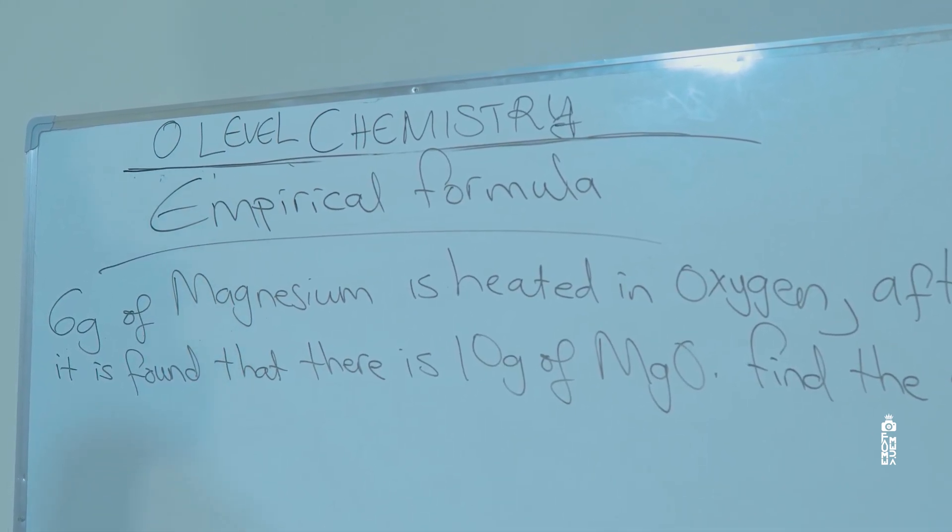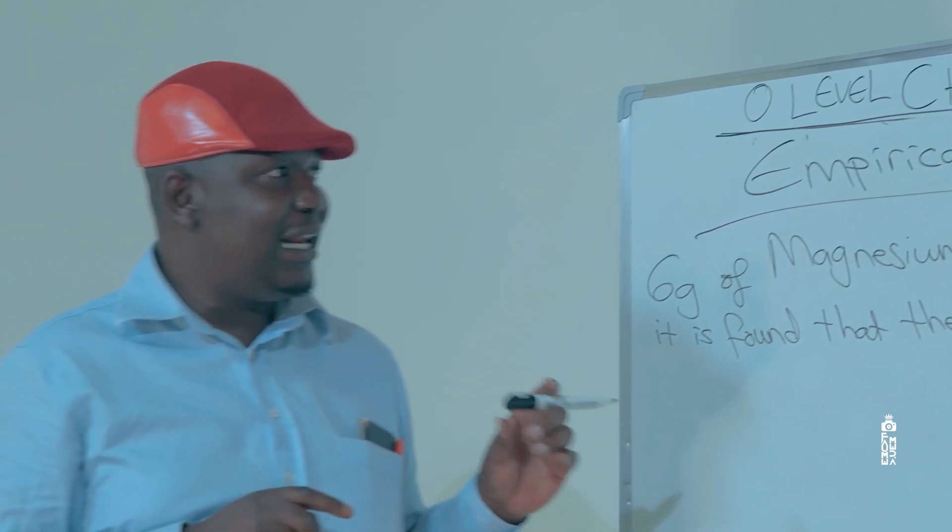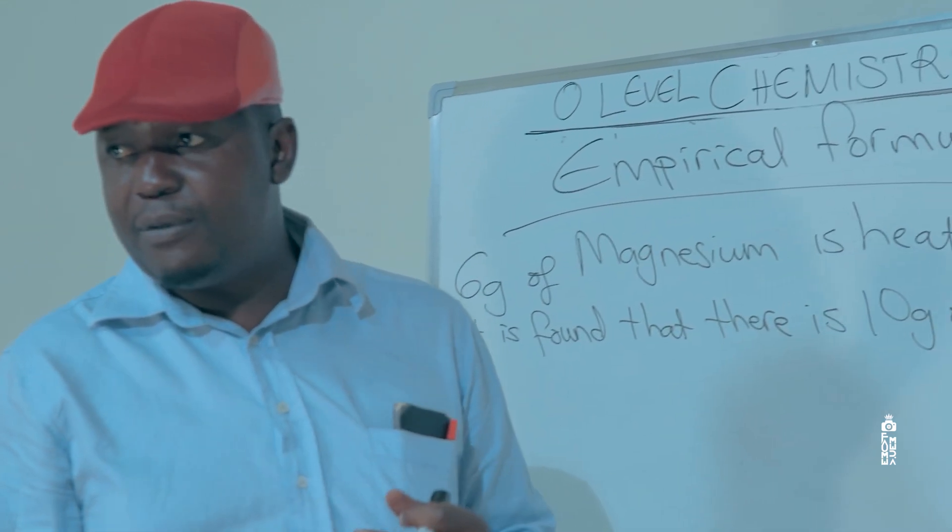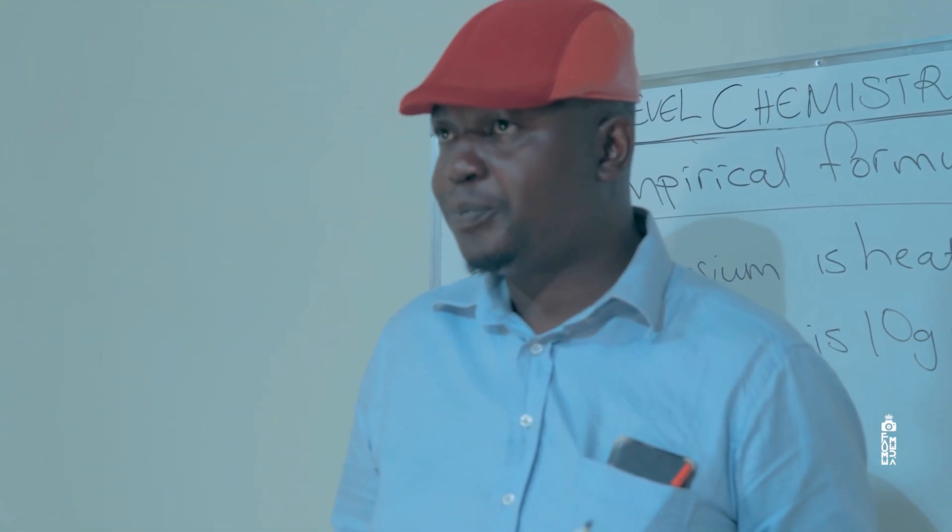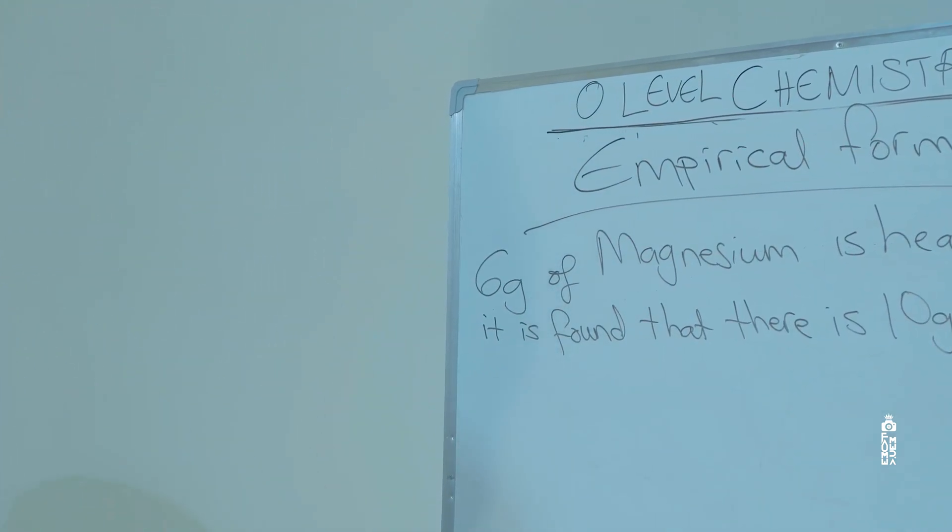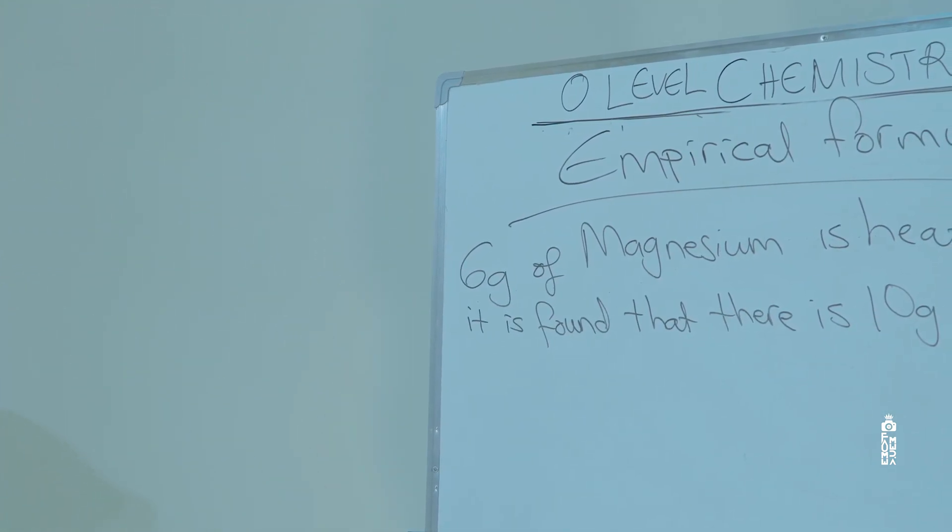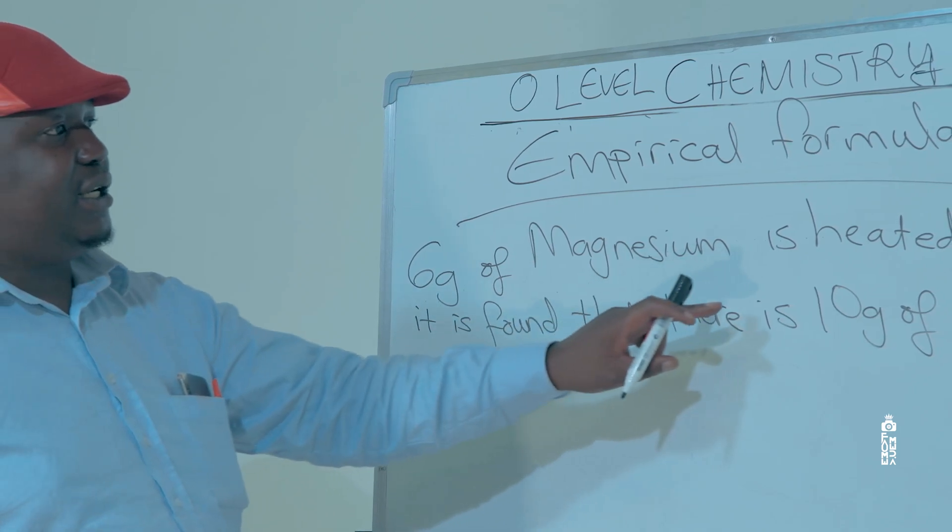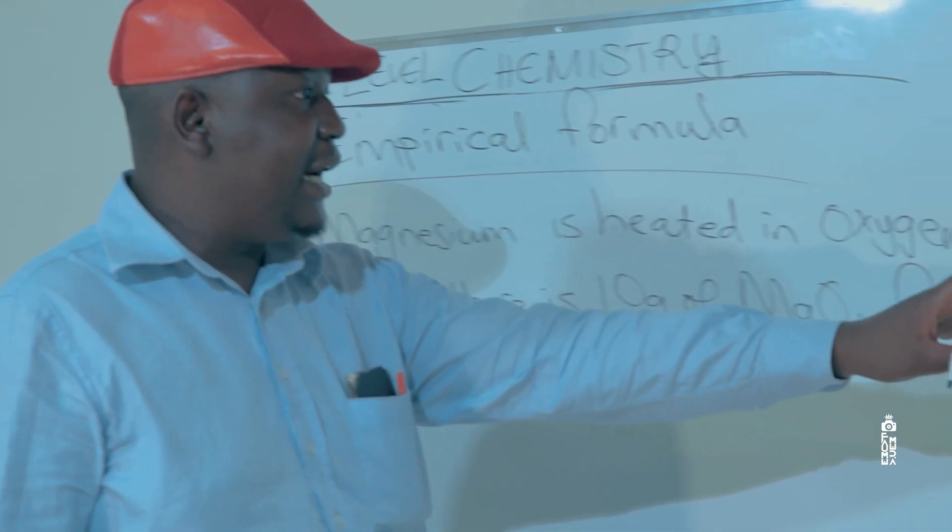I'm going to go step by step in explaining the procedure of how to calculate the empirical formula of a substance. We've got a question on the board: 6 grams of magnesium is heated in oxygen, after cooling and re-weighing